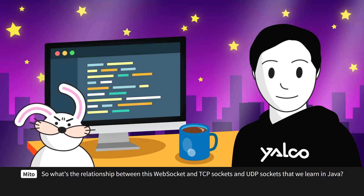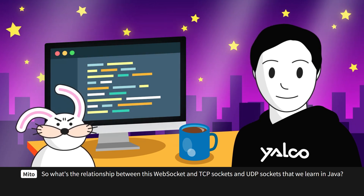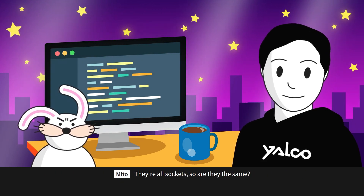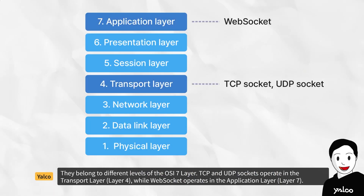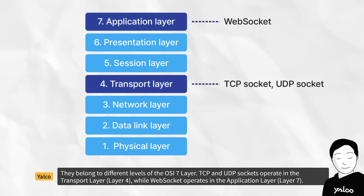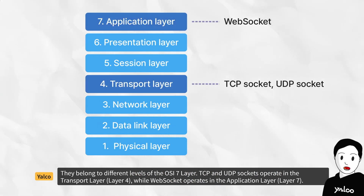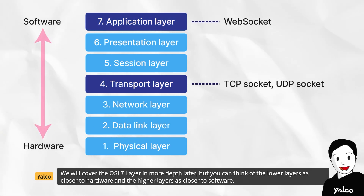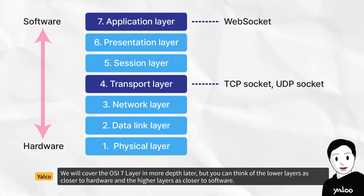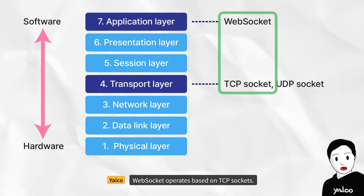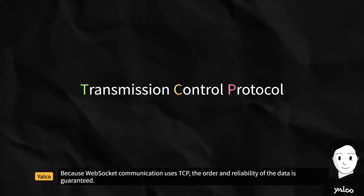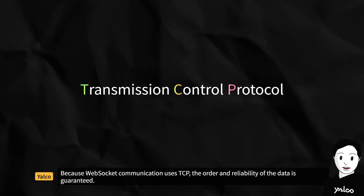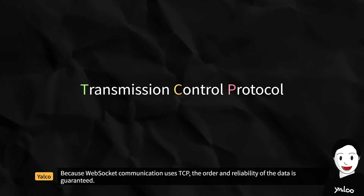What's the relationship between WebSocket, TCP sockets, and UDP sockets that we learn in Java? They're all sockets — are they the same? They belong to different levels of the OSI 7 layer. TCP and UDP sockets operate in the transport layer, layer 4, while WebSocket operates in the application layer, layer 7. You can think of the lower layers as closer to hardware and the higher layers as closer to software. WebSocket operates based on TCP sockets. Because WebSocket communication uses TCP, the order and reliability of the data is guaranteed.